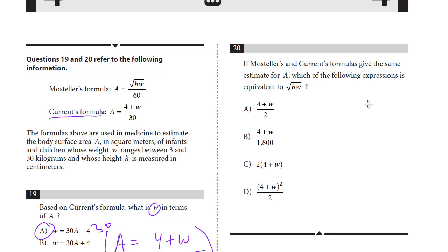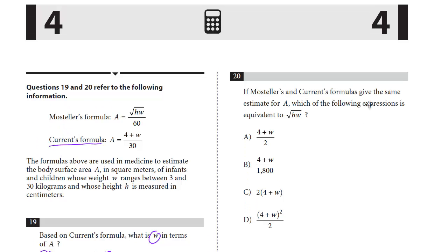All right, let's take a look at the second question, number 20. If Mosteller's and Current's formulas give the same estimate for A, which of the following expressions is equivalent to the square root of HW.